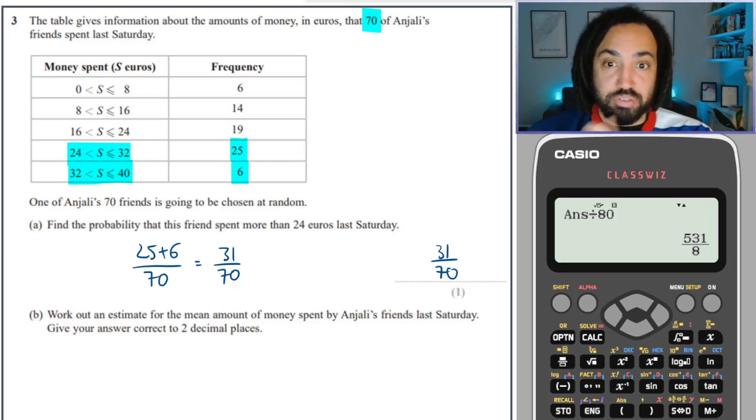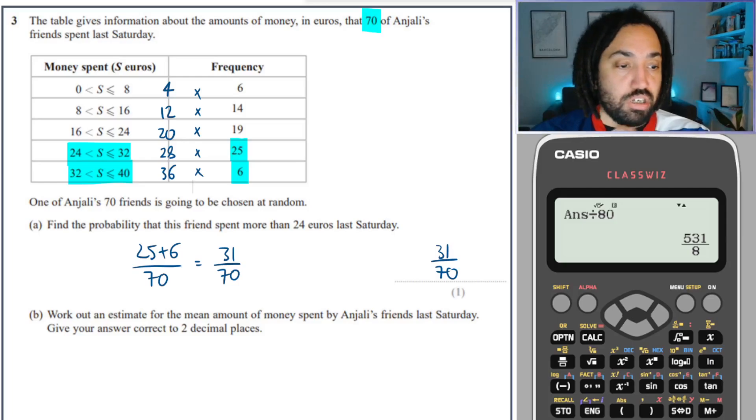Now estimate for the mean. The midpoint here is 4 because it's halfway between 0 and 8. The midpoint here is 12 and this one is 20. This one is 28 and this final one is 36. Then we're going to multiply by the frequencies and that's going to give us our values for the amount of money overall.